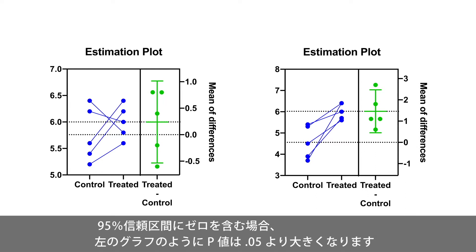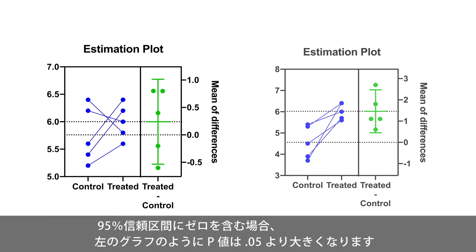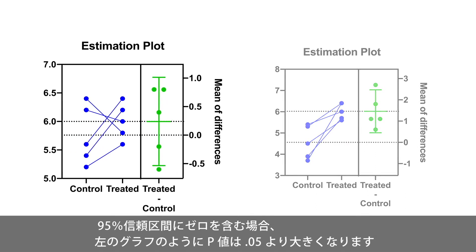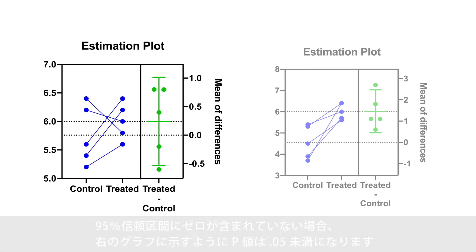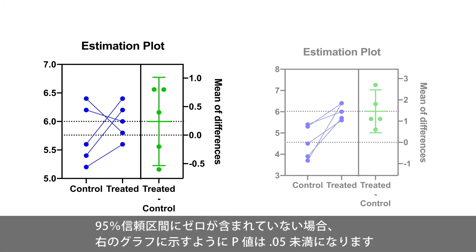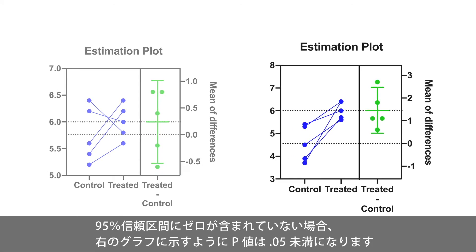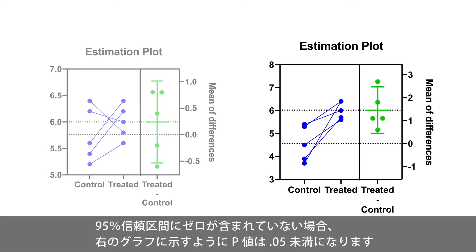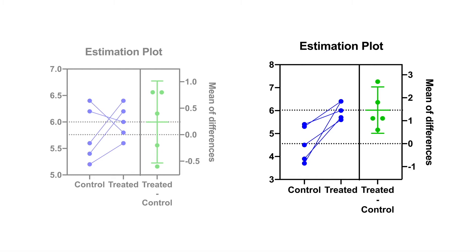If the 95% confidence interval includes 0, as shown on the graph on the left, the p-value will be greater than 0.05. And if the 95% confidence interval does not include 0, as shown in the graph on the right, the p-value will be less than 0.05.